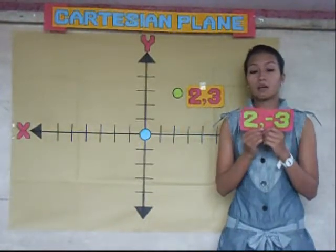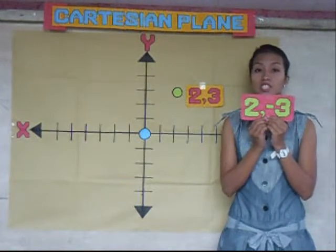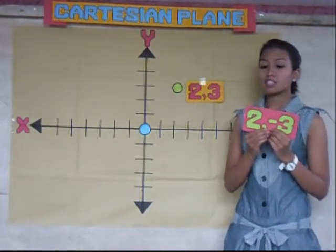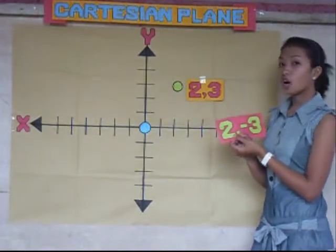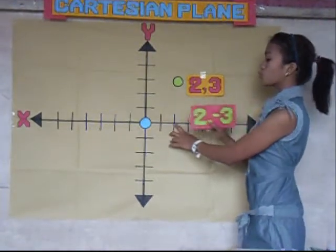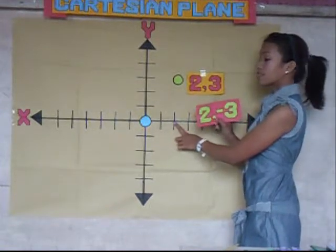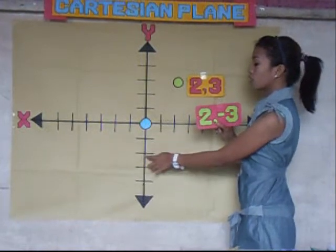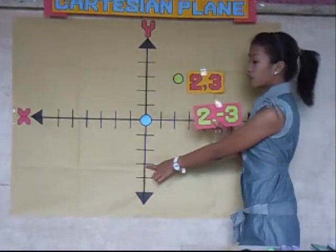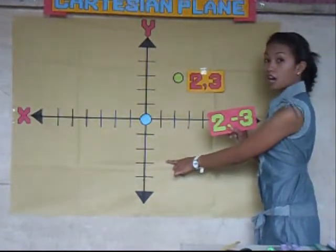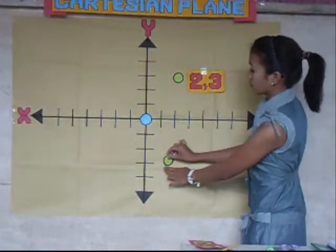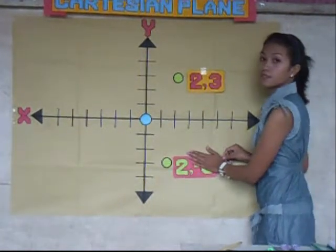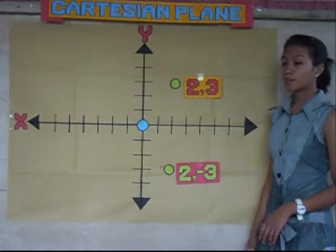The next ordered pair is (2, −3). Since x is positive and y is negative, this pair is in the fourth quadrant. From the origin, count 2 to the right — 1, 2. Then count 3 going down — 1, 2, 3. So this would be the location of your y value, and the ordered pair (2, −3) is plotted here in the fourth quadrant.